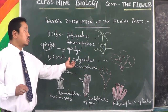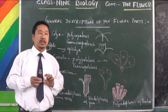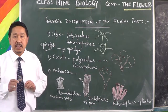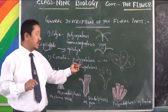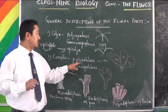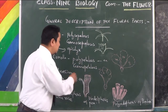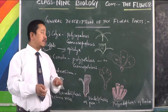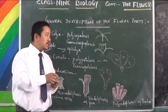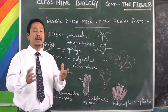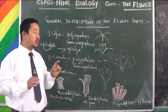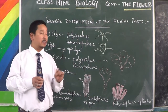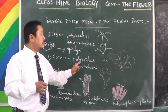Similarly, for the corolla: in some flowers we find the petals are free, not joined. Such an arrangement of free petals is called polypetalous.